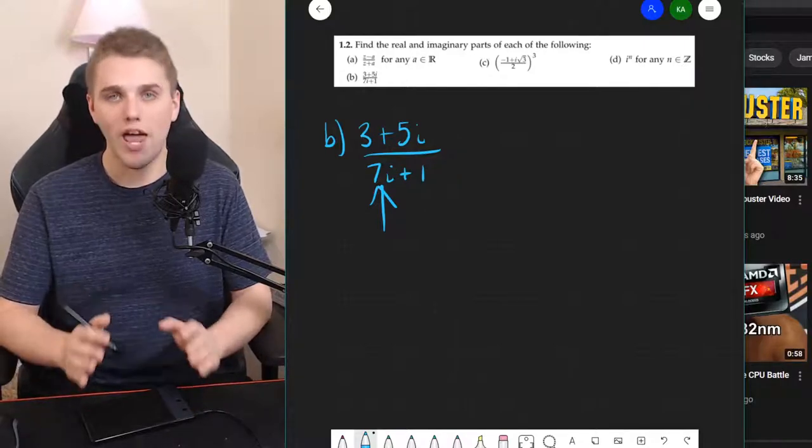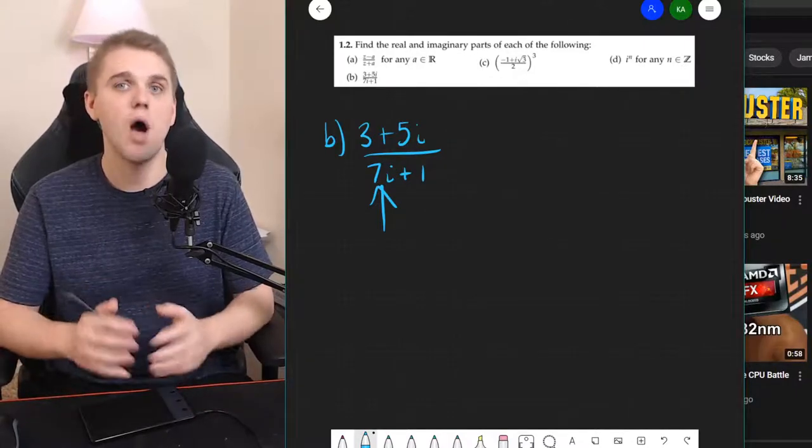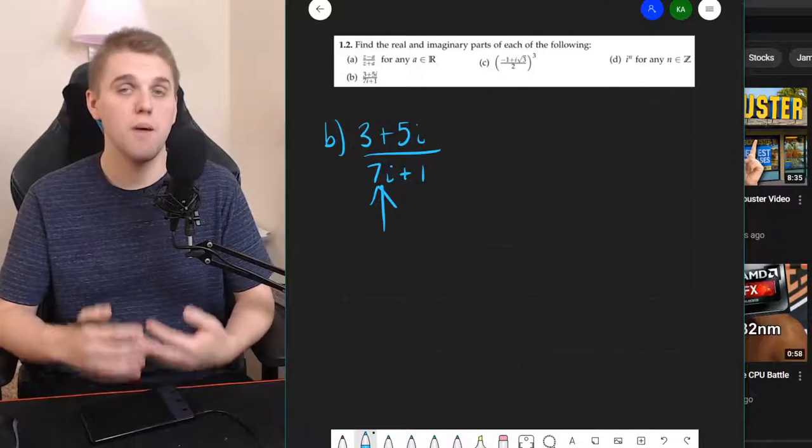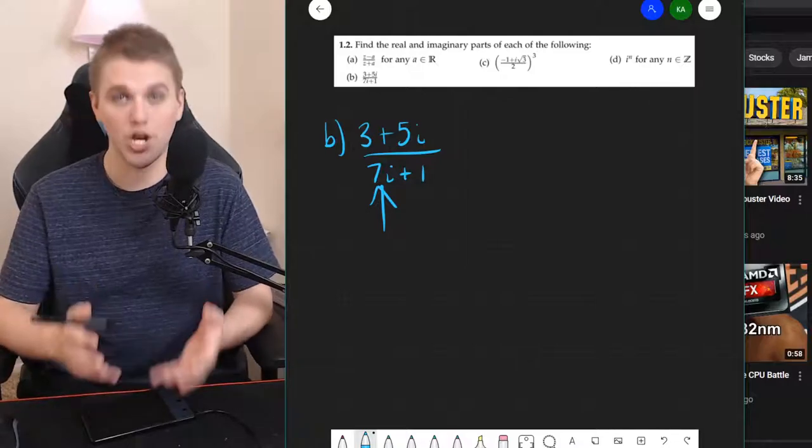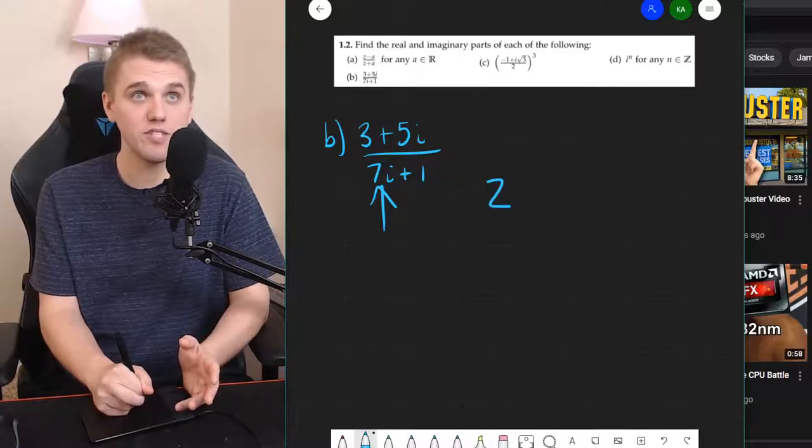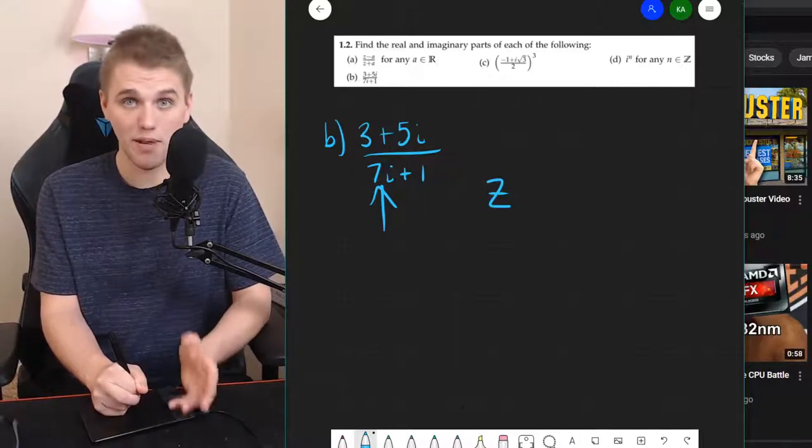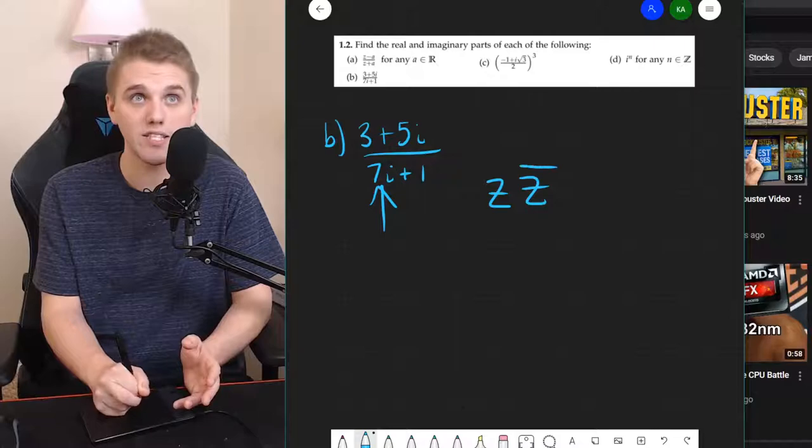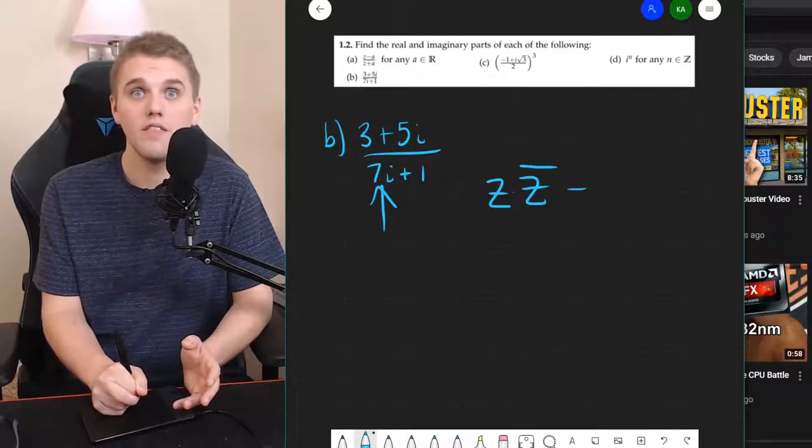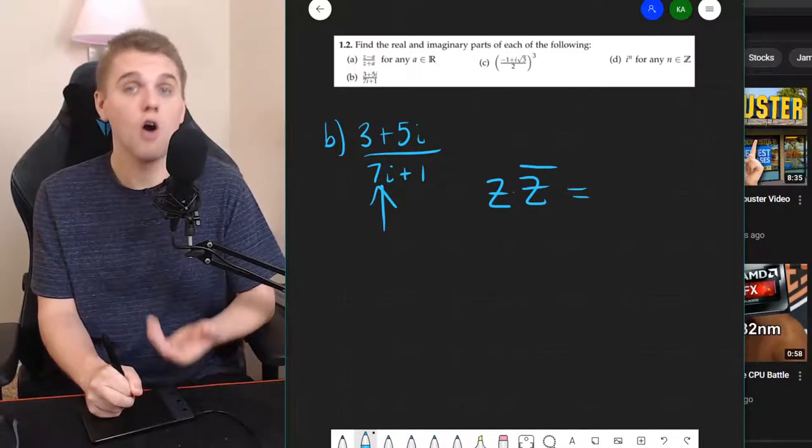Well a good strategy is to somehow multiply this denominator by its complex conjugate. And the reason why is because if you take any complex number and multiply it by its conjugate, this is going to be a real number.